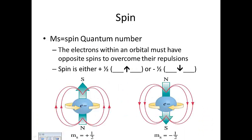The last quantum number is spin, MS. This is the reason why you can only have two electrons in every orbital. Electrons must spin in different directions to counteract each other — if two electrons spin the same direction, they repel each other too much. One spins left to right (plus one half), the other right to left (minus one half), creating opposing magnetic fields so they don't repel as much. That's why we draw arrows up and down in orbital diagrams.